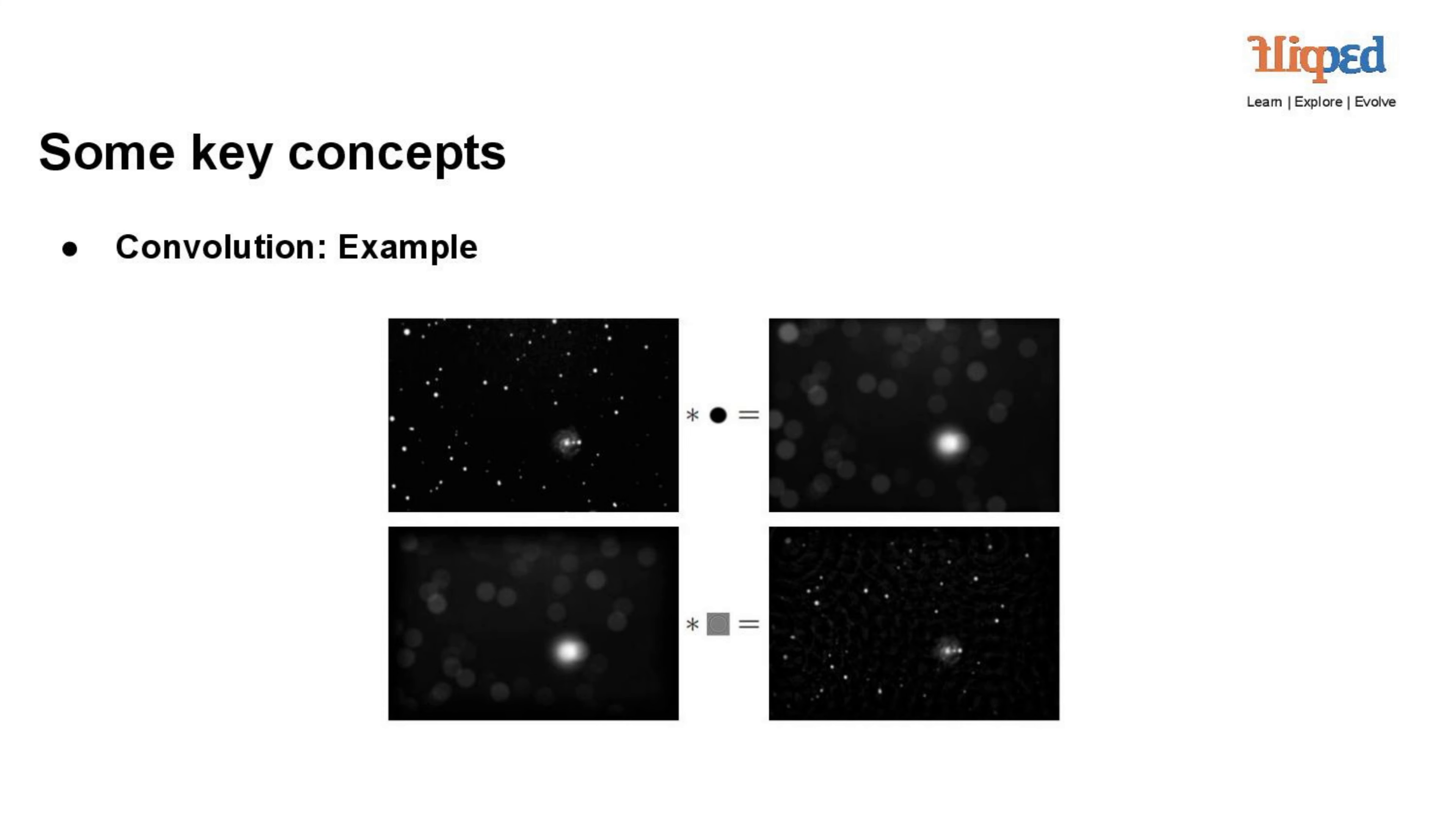Convolution plays a crucial role in various image processing tasks, such as blurring, sharpening, edge detection, and noise reduction. It allows us to modify and enhance images by applying specific filters or operations to different regions of the image.